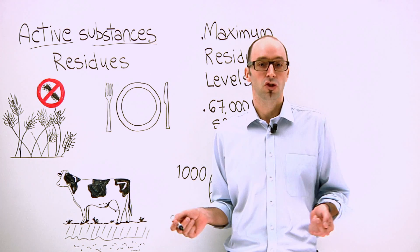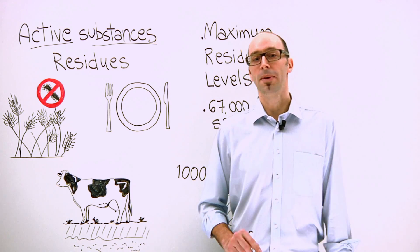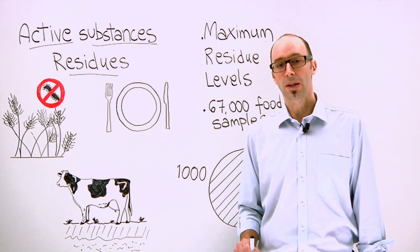Pesticides can be widely distributed in the environment, where they could be harmful to plants and animals. In some cases, small amounts called residues can find their way into the food that we eat.